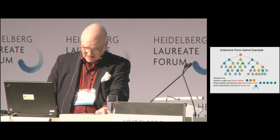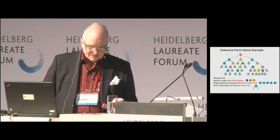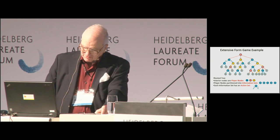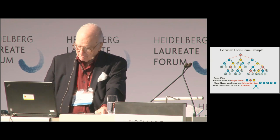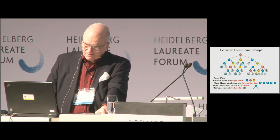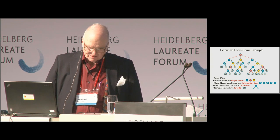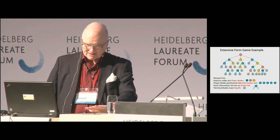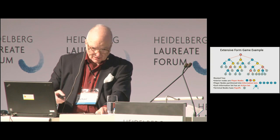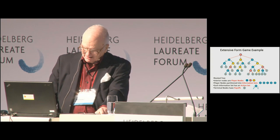For each information set, there's an action set — a set of actions that the player can take. It's important to understand that if there are two nodes in the same information set, they have the same action set. Otherwise they'd be different, because the player would know which one he was at. Finally, we put the payoffs at the terminal nodes. Each terminal node has a payoff to each of the three players. Because I'm only interested in describing strategy sets — not recommending which one to pick — the actual payoffs are irrelevant here. I've simply indicated them with dollar signs.